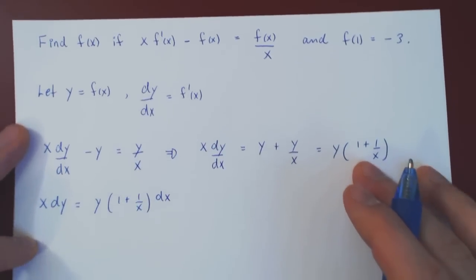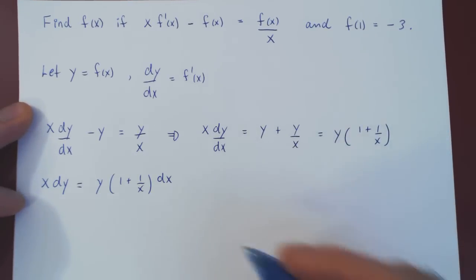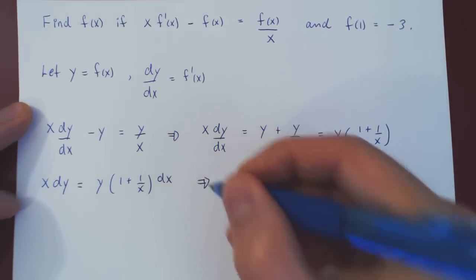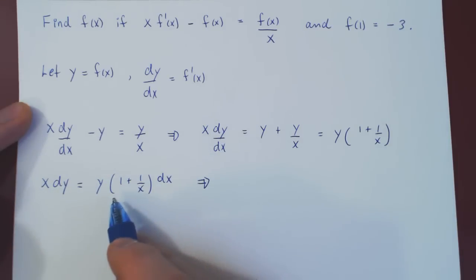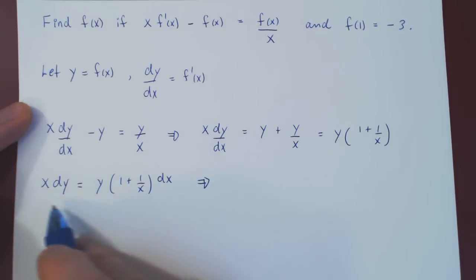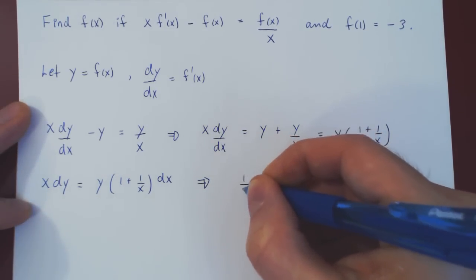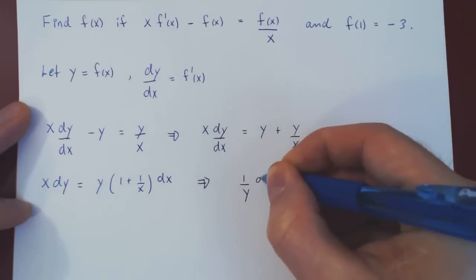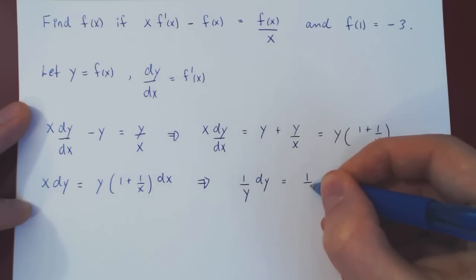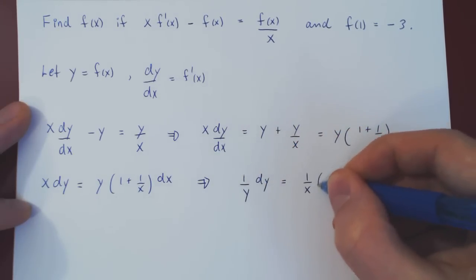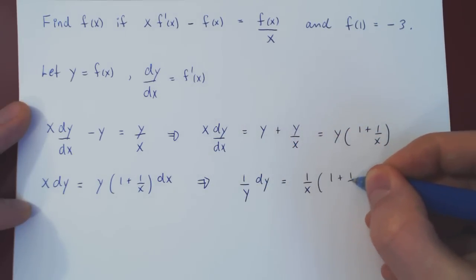Dividing both sides by x and by y, we complete the separation of variables. This gives us 1 over y dy equals 1 over x times (1 plus 1 over x) dx.